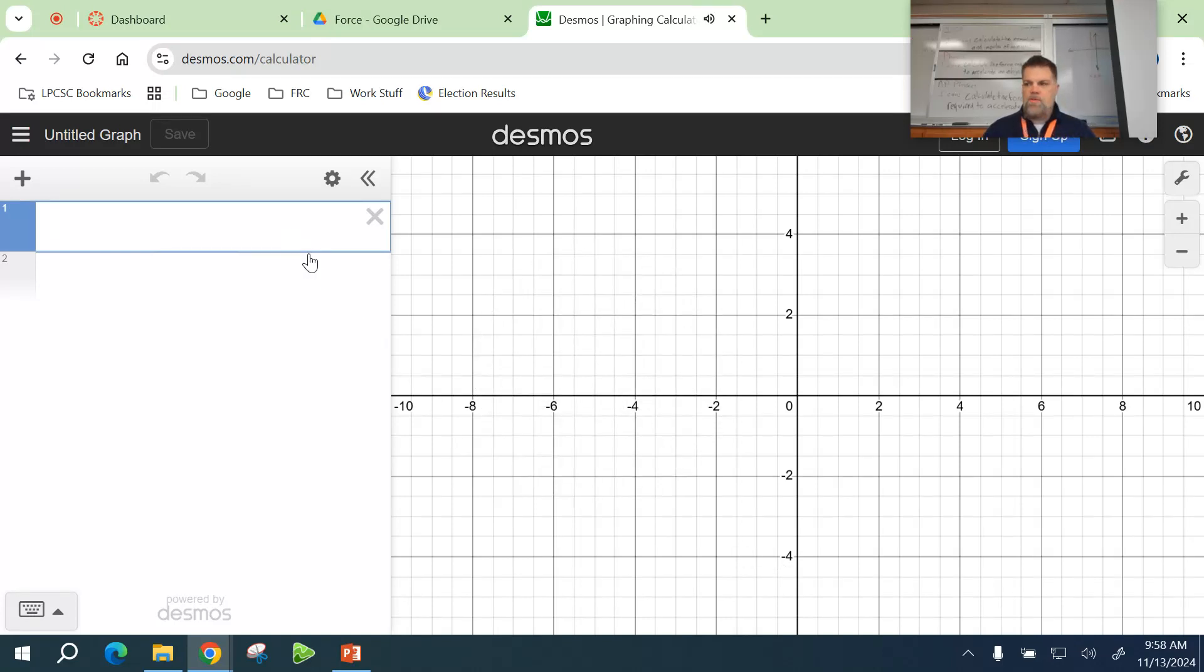Alright, so I'm going to show you how to plot points. The easiest way is just to do x comma y. So if I say 1 comma 3, notice that this point here, 1 comma 3, shows up.